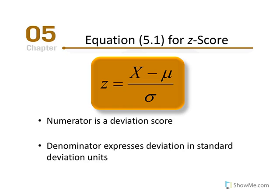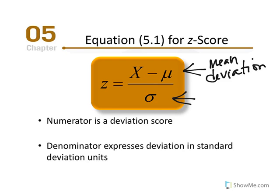Here we have the equation for calculating a Z-score. Z is equal to our X-value minus the mean — and if we think back to Chapter 4, that represents mean deviation — divided by the standard deviation of that particular distribution. The Z-score tells us the exact location of an X-value in a distribution in relation to the mean, expressed in standard deviation units.